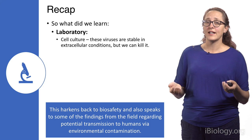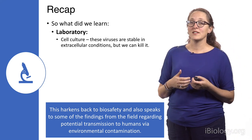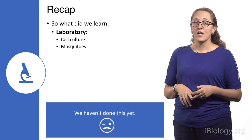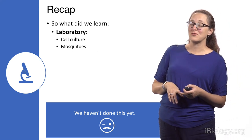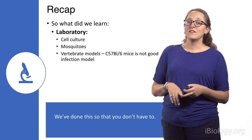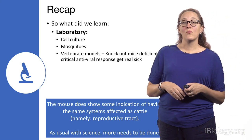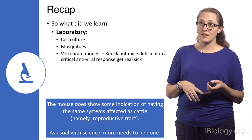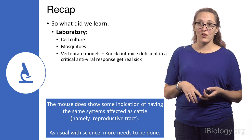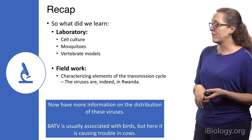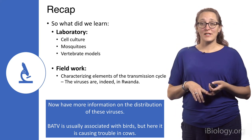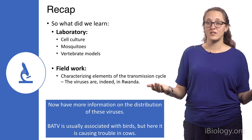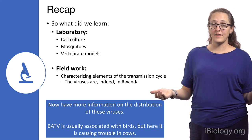We also learned that the viruses are stable in extracellular conditions — but we can kill them with Triton X-100, which is good. This speaks to biosafety both in the field and in the lab. We haven't done anything with mosquitoes yet, but that is something we really need to do to finish characterizing these viruses. We also learned the C57 mouse is not a good infection model — I've done this so you don't have to. We determined the knockout mouse is susceptible, with potential utility to study pathogenesis in the reproductive tract and possibly as a proxy model for diffuse hemorrhagic fever disease.